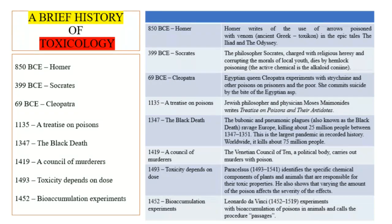In 1493, Paracelsus established that toxicity depends on dose. He identified chemical components in plants and animals and their toxic properties. He showed that varying amounts of poison affect the severity of effects — the severity can increase or decrease depending on the dose. Leonardo da Vinci also conducted bioaccumulation experiments, discovering that poisons can accumulate in living organisms, calling the procedure 'passages.'